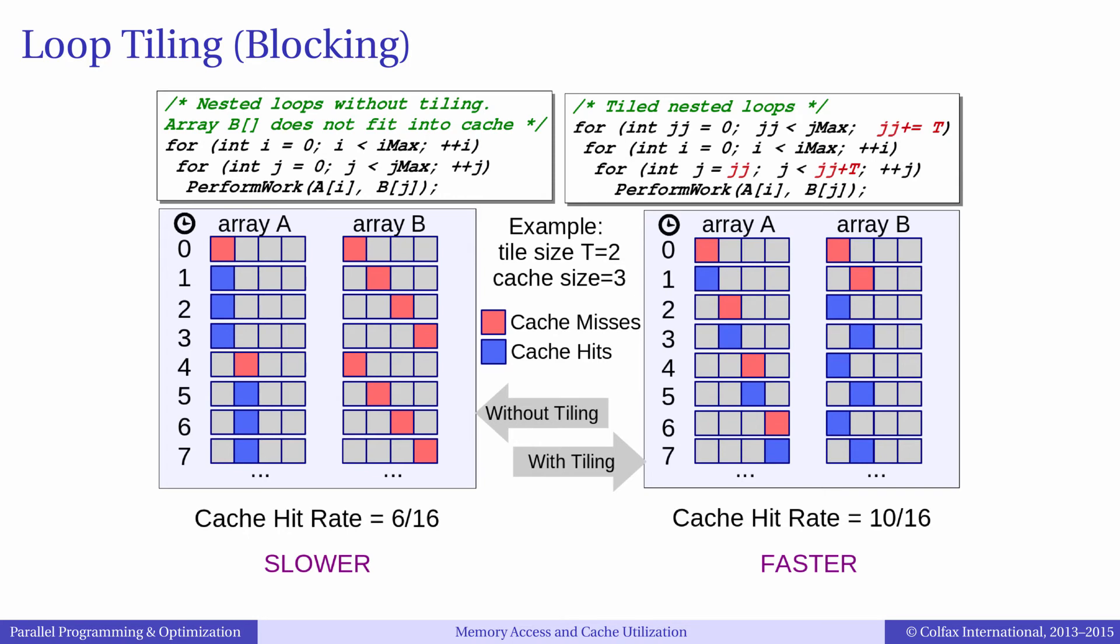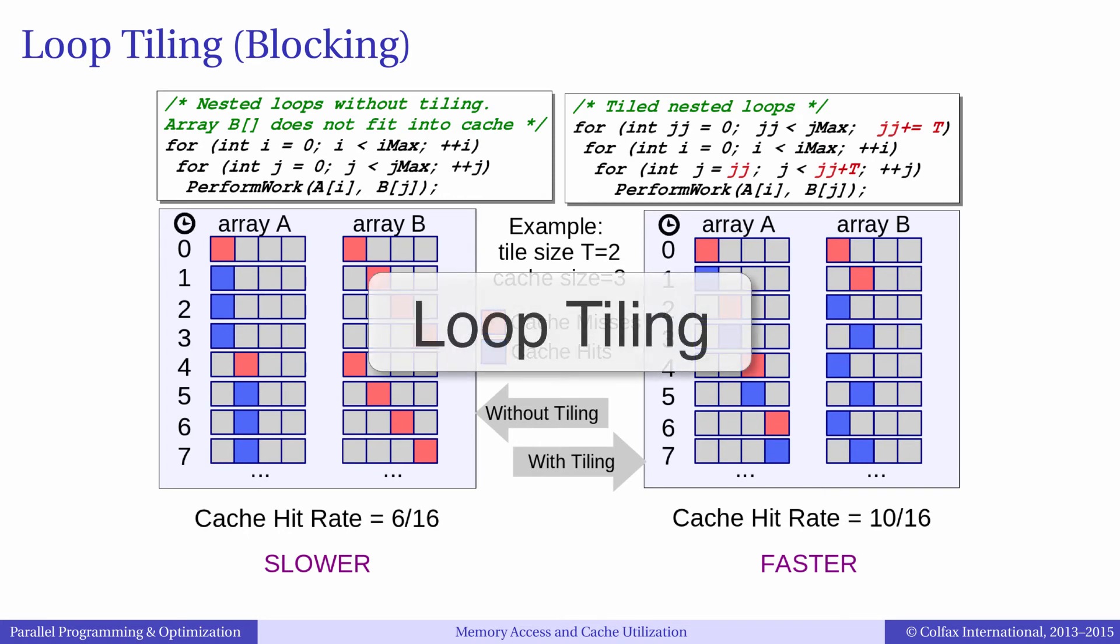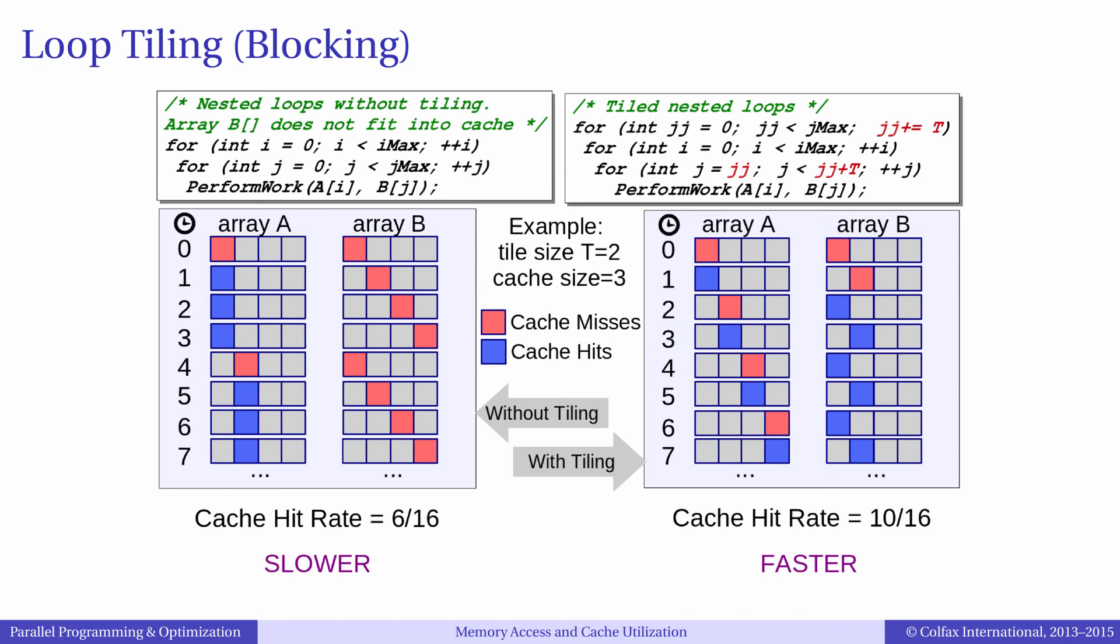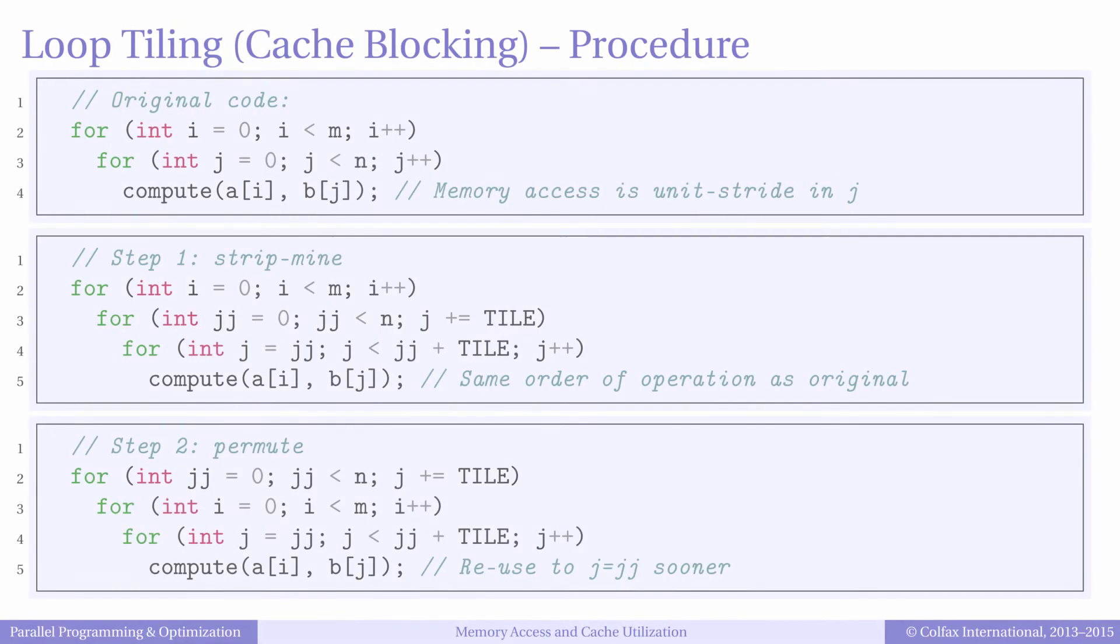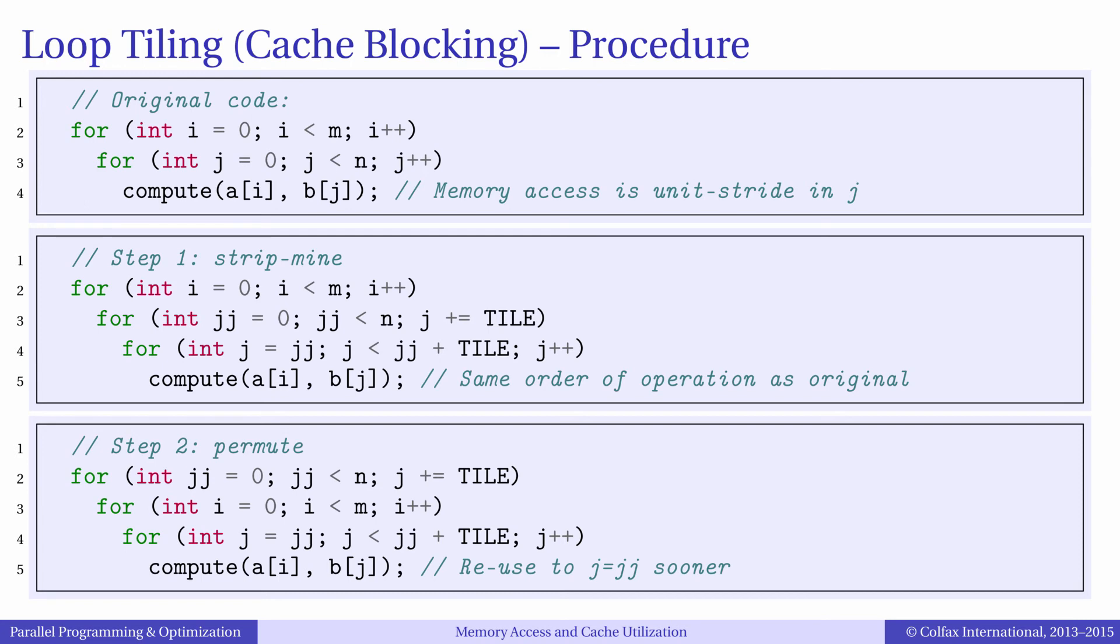The operation that we performed here is called loop tiling, and the strategy that we applied is called cache blocking. We converted this algorithm into blocks that fit into our cache. Loop tiling is a standard technique for memory traffic optimization in systems with hierarchical caches.